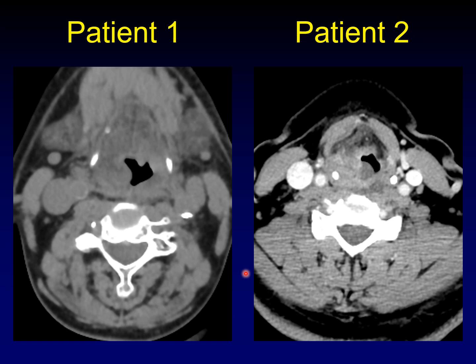In patient number two, what we're seeing is the effect of an acute infection, probably superinfection of that saccular cyst shown on the last slide. You can get asymmetric enhancement and it can arise within the larynx, or it can be secondary in the larynx to an infection elsewhere in the head and neck, such as in the oropharynx spreading down into the neck.